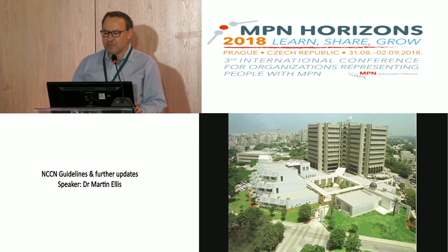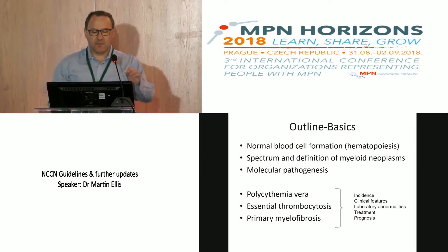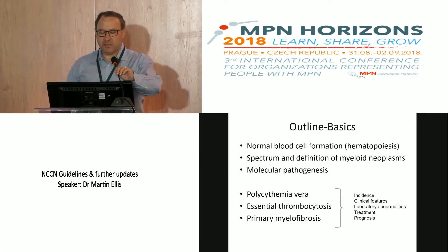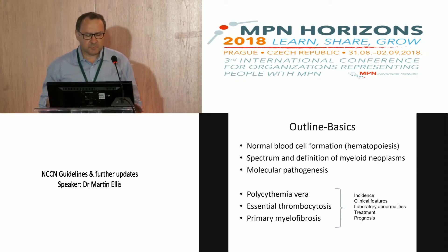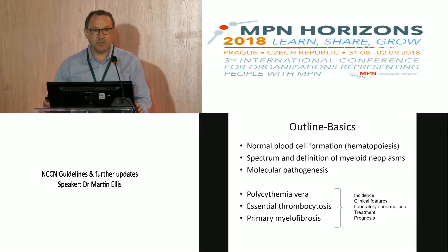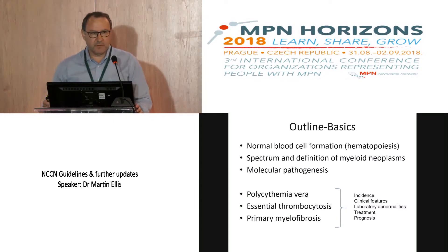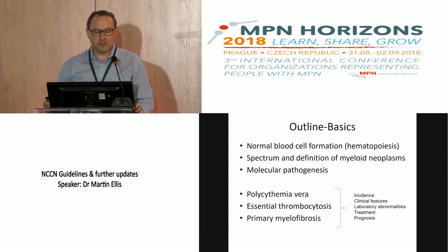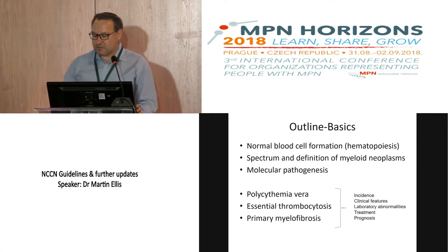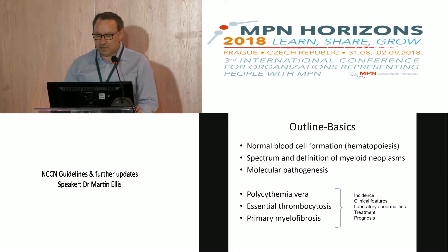This is the Tel Aviv Medical School where I work. The outline for the talk: first we'll go through the basics — normal blood cell formation, hematopoiesis — then the spectrum and definition of the myeloid neoplasms, and we'll go through the molecular pathogenesis in some detail, especially for people not that familiar with the genes involved. We'll then go through each of the three classical myeloproliferative neoplasms that are so-called Philadelphia-negative, covering their incidence, clinical features, laboratory abnormalities, treatment, and prognosis.